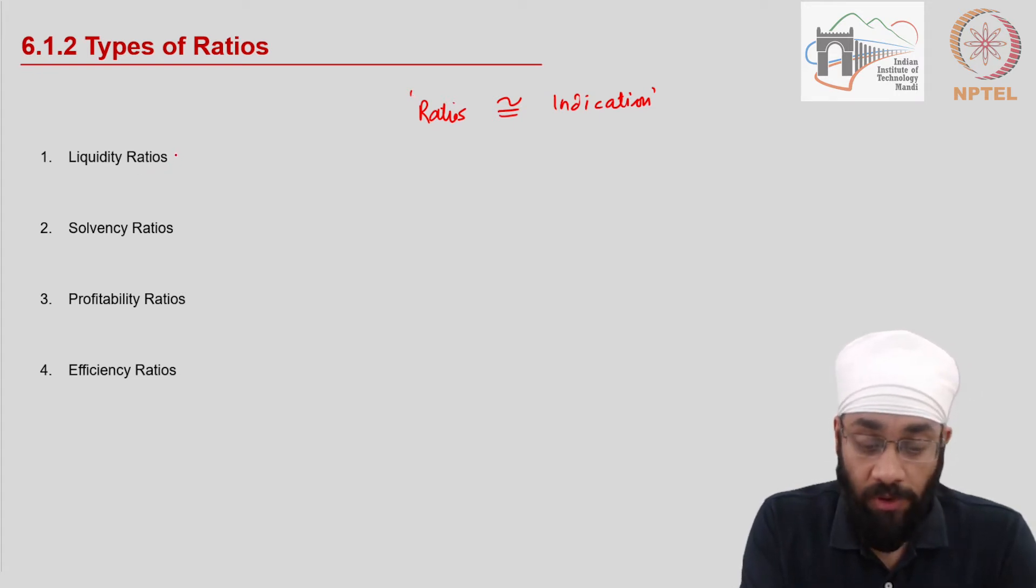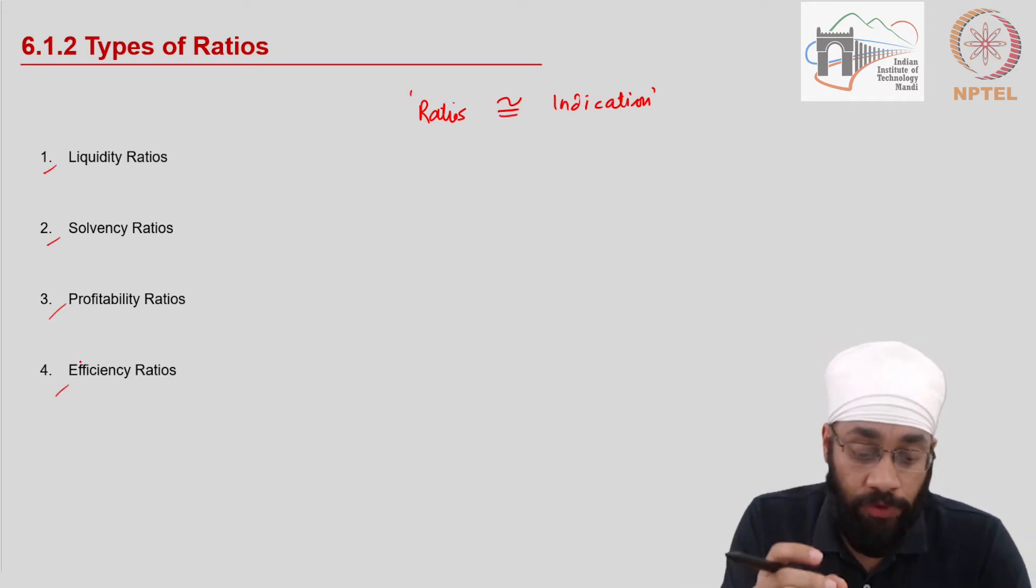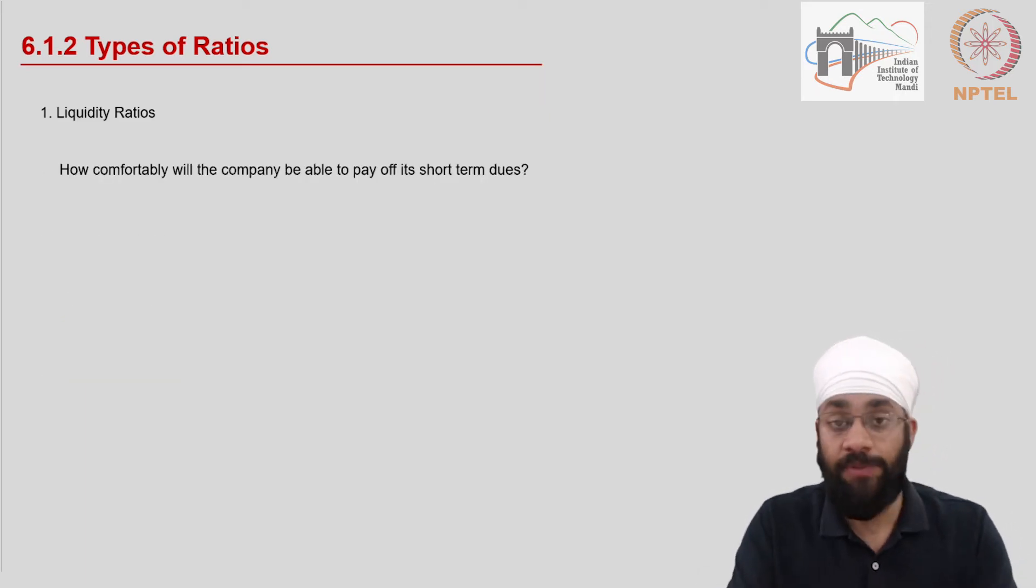So the ratios or the indicators are categorized into four. There are liquidity ratios, solvency ratios, profitability ratios and efficiency ratios. I'm going to spend a few minutes on each of these to introduce you to these categories, these types of ratios.